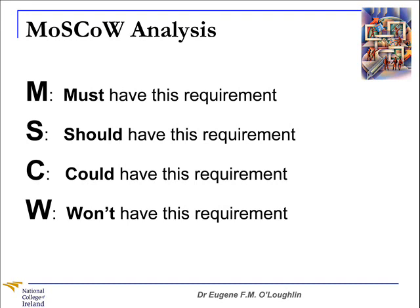The must requirements should be regarded as non-negotiable. Without them the project will fail, and it is imperative to get agreement on what these requirements are. The should requirements are those that should be implemented if at all possible, and while they are high priority, they can sometimes be satisfied in different ways. The could requirements are those that are nice to have, but should only be included if appropriate resources are available. The won't requirements are those that will not be implemented, though they may well be implemented at a later time. Drawing up a list of requirements that won't be implemented can be just as important as drawing up a list of those that must be implemented.